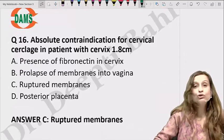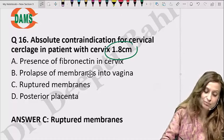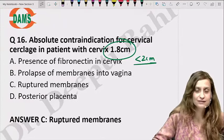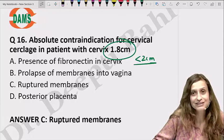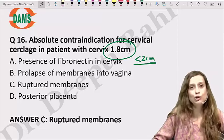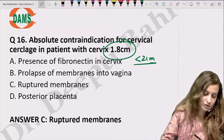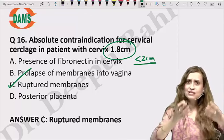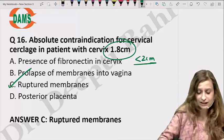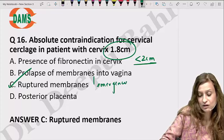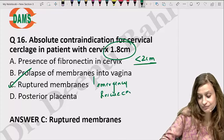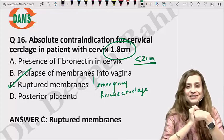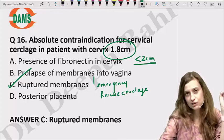The question asks about absolute contraindication for cervical cerclage in a patient with cervix of 1.8 cm (less than 2 cm = short/incompetent cervix, high probability of preterm labor). The absolute contraindication is ruptured membranes. When membranes are prolapsing into the vagina but not yet ruptured, an emergency or rescue cerclage can still be performed. Once ruptured, it becomes an absolute contraindication.